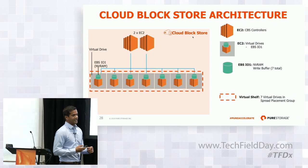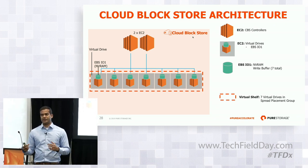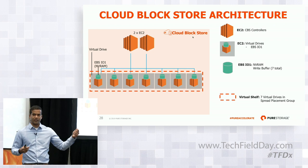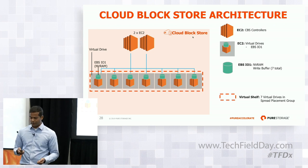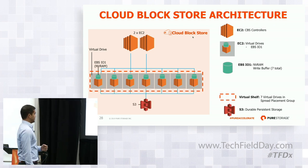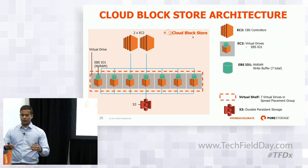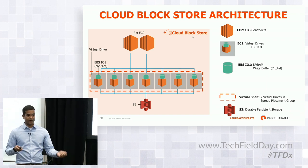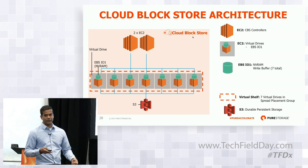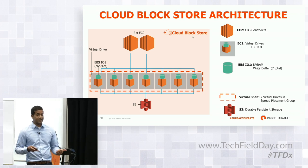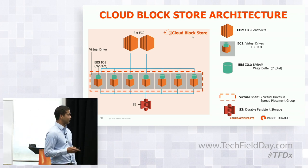For NVRAM, we are attaching IO1 volumes to each of these EC2 instances. We only really need this for fast writes — when a write comes into Cloud Block Store, it's mirrored to two NVRAMs before we acknowledge it to the host. IO1s give us that low latency profile we're looking for. But we de-stage the data into S3. We love S3 because it's extremely durable — that's where the bulk storage of Cloud Block Store is. It's high bandwidth, so we can de-stage the NVRAMs really fast. Unfortunately, S3's read latency is rather high, so that doesn't quite solve our problem yet.